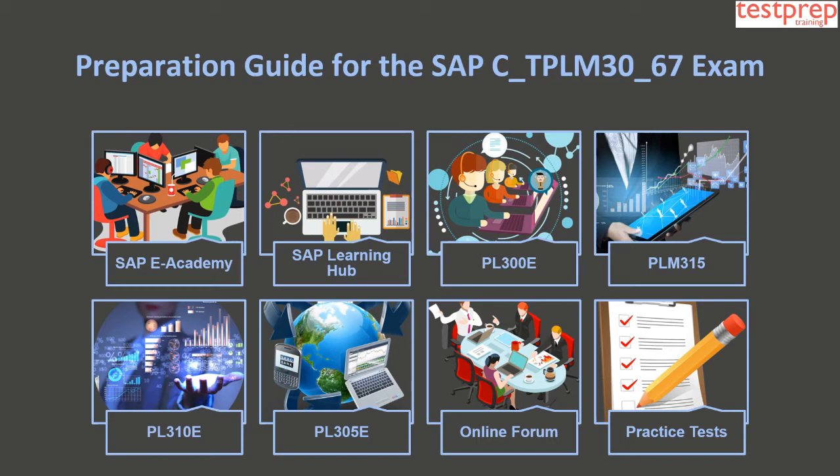Learning Resource 6 is PL305E, a course about Managing Technical Objects. It covers topics like bills of material, equipment, linear asset management, managing technical objects, and functional locations.